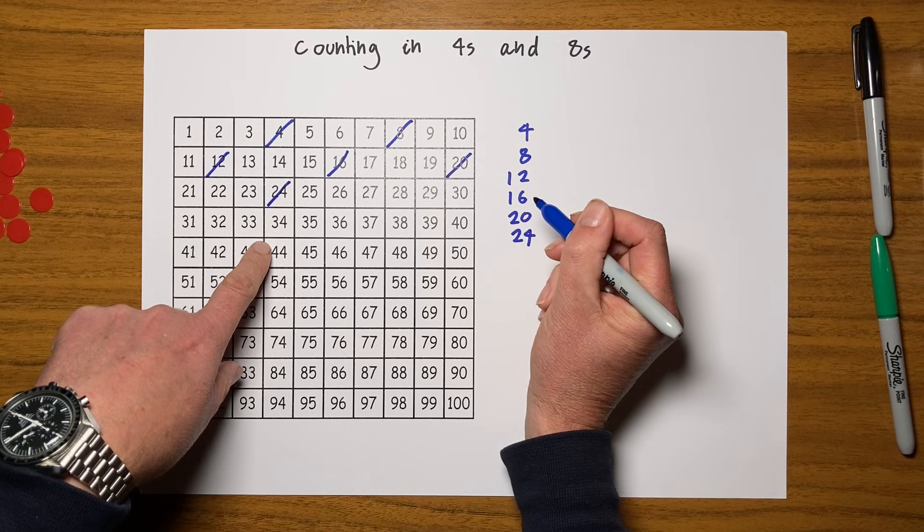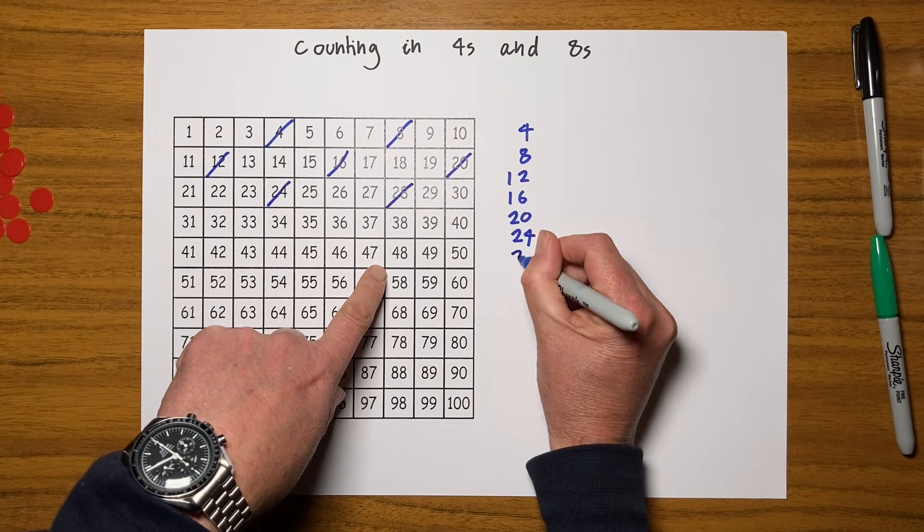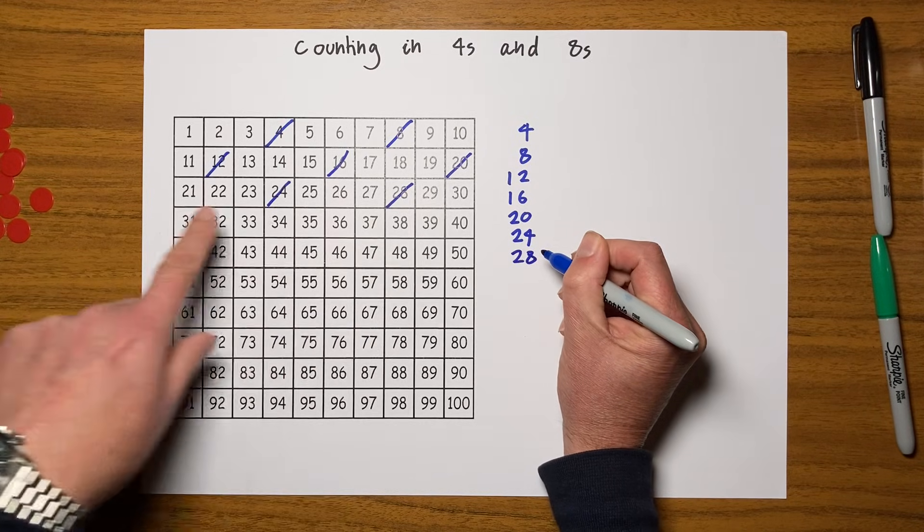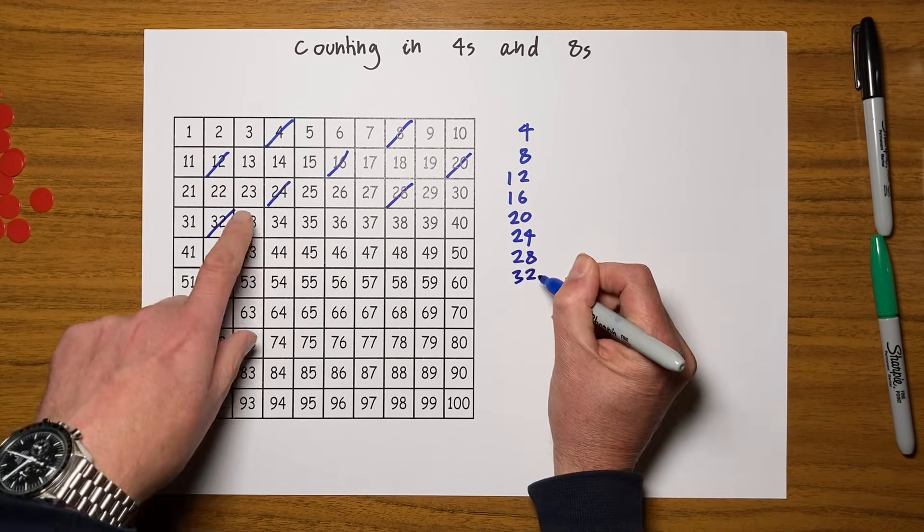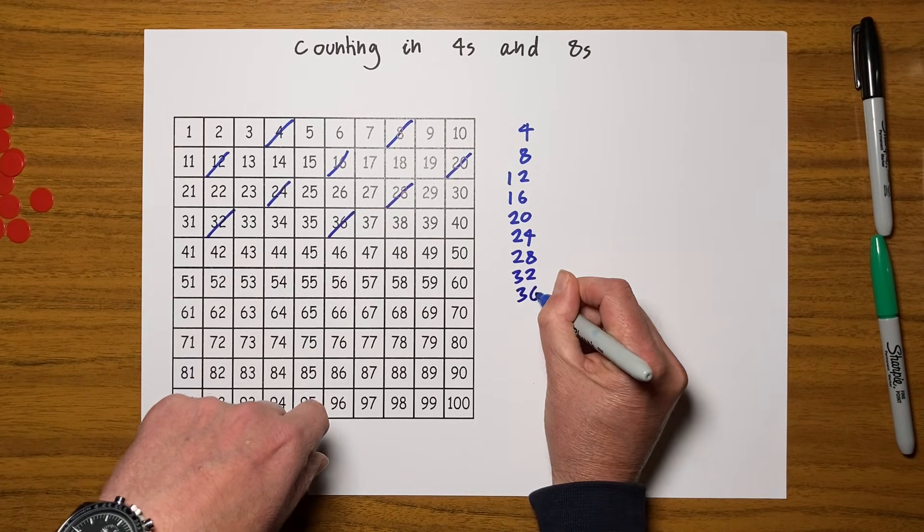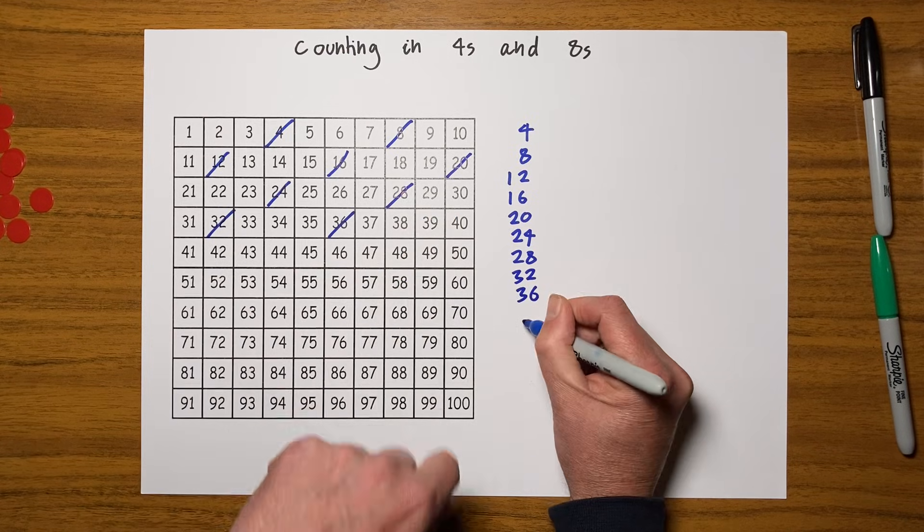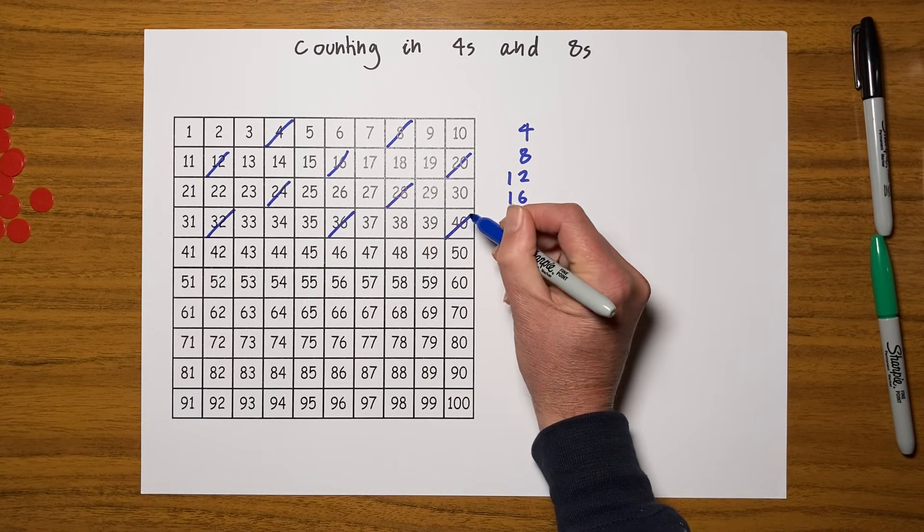I haven't marked this as I've been going along, which would have been nice, but I will start to now. One, two, three, four, twenty-eight. One, two, three, four, thirty-two. One, two, three, four, thirty-six. One, two, three, four, forty.